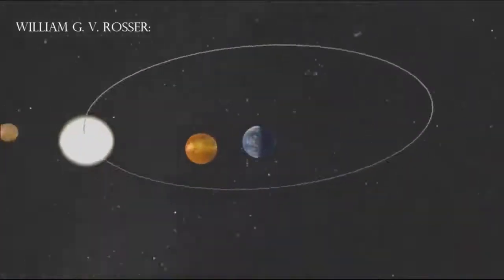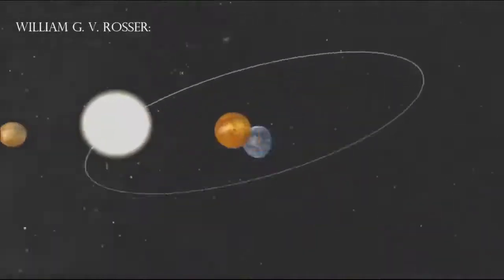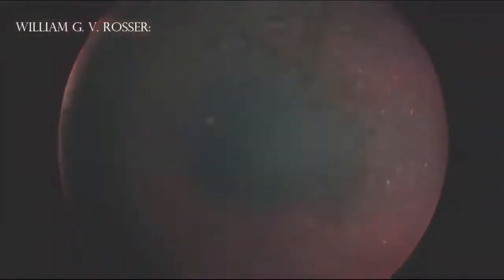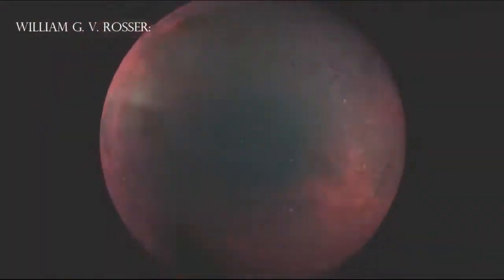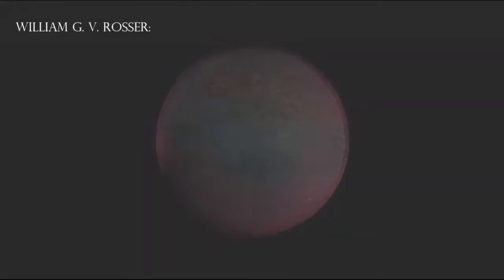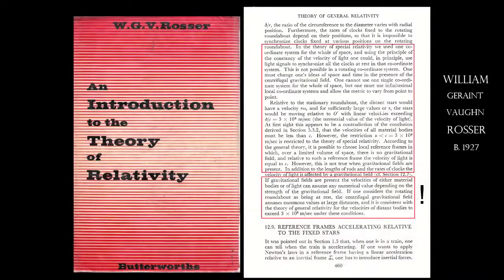If gravitational fields are present, the velocities of either material bodies or of light can assume any numerical value, depending on the strength of the gravitational field. If one considers the rotating roundabout, Earth, as being at rest, the centrifugal gravitational field assumes enormous values at large distances, and it is consistent with the theory of general relativity for the velocities of distant bodies to exceed the speed of light at 3 times 10 to the 8th power meters per second under these conditions. Notice what Rosser is saying. He is describing a geocentric universe in which the Earth is at rest in the center and the universe is rotating around it.